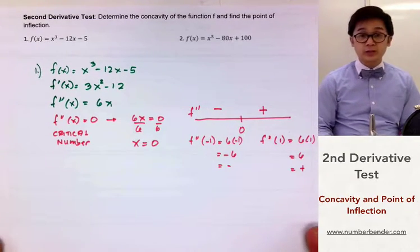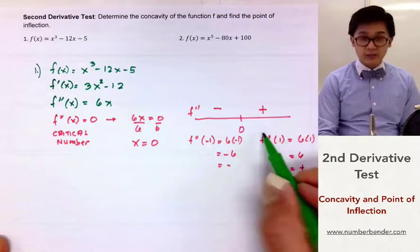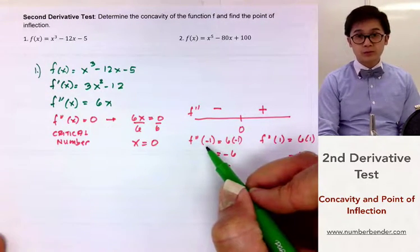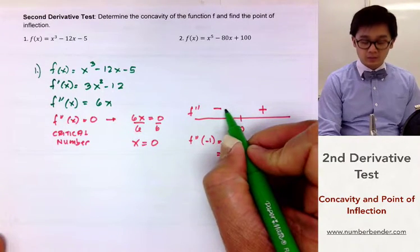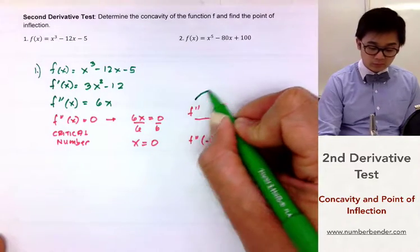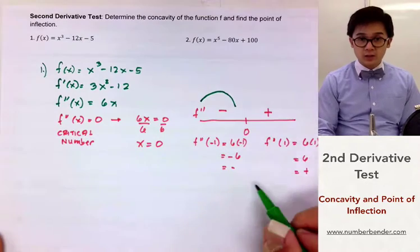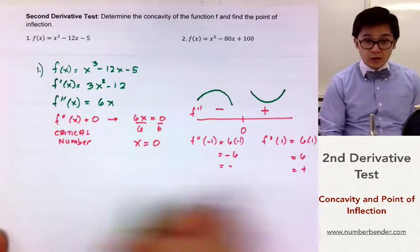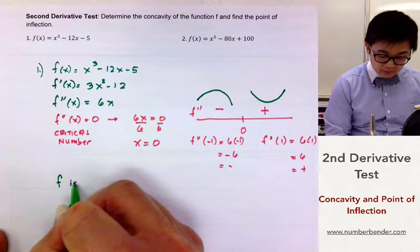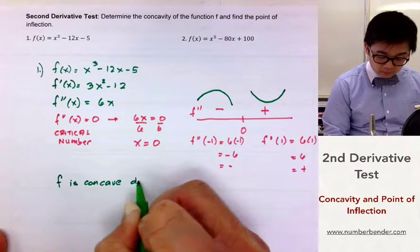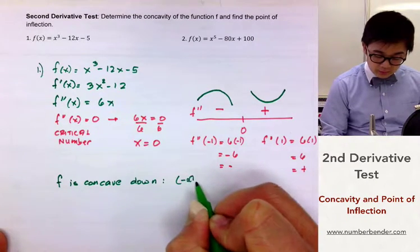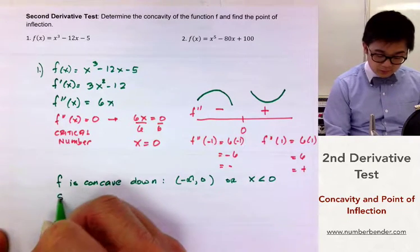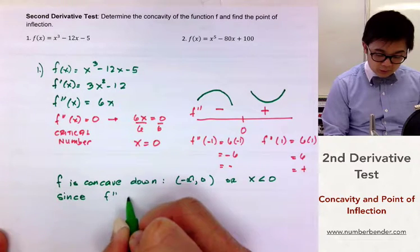Since we are using the sign chart for a different purpose — to determine concavity — the sign of our second derivative tells us the concavity of the function. If it's negative, the function f is concave down; if it's positive, the function f is concave up. So f is concave down on the interval negative infinity to 0, or x less than 0, since f double prime is negative there.